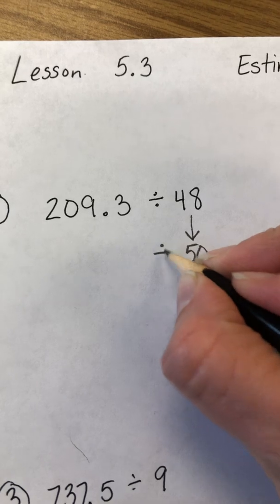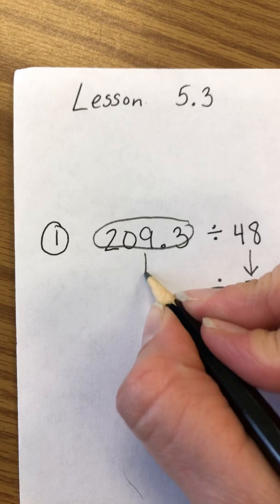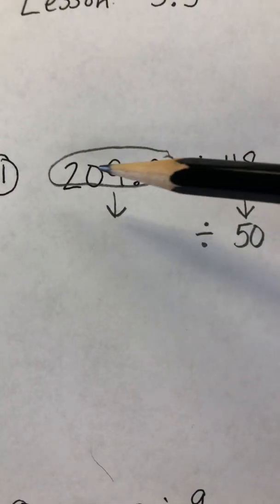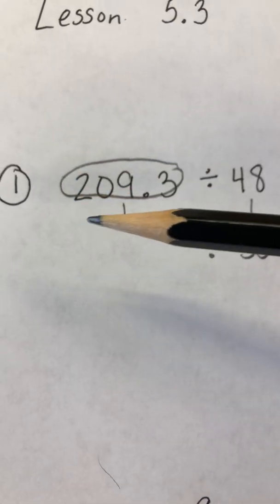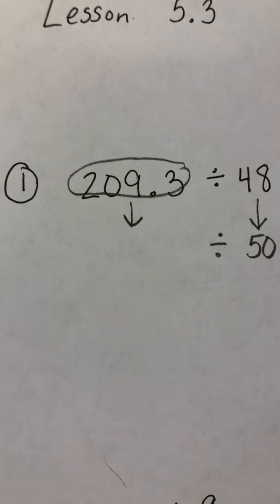Copy down our division sign, and then this entire number we're going to round. I like to pretend that the decimal is not there and think of this as just the number 209. So 209 is going to round down to 200.